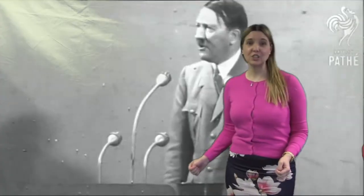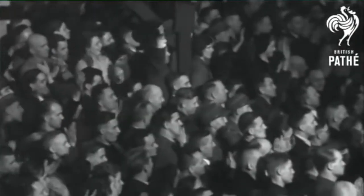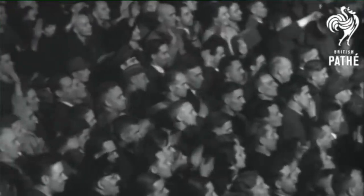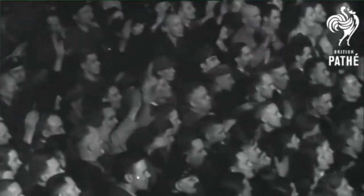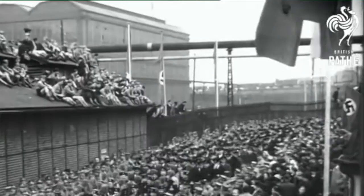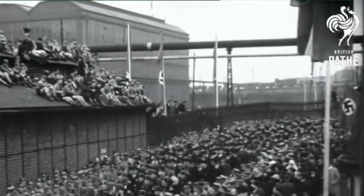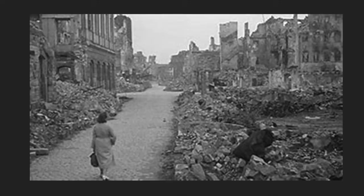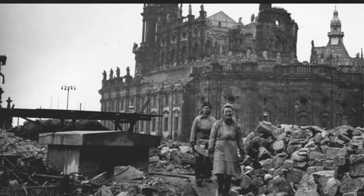Here I am at the Nuremberg Rally, and you can see this guy has just become leader of Germany — he looks quite popular. As part of our GCSE course, what we look at is how he came to power — that's Hitler — and also how he controlled people. We look at propaganda, we look at terror groups, and then lastly we look at the impact of World War II on the German people.